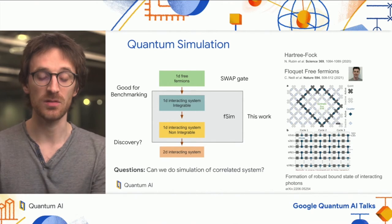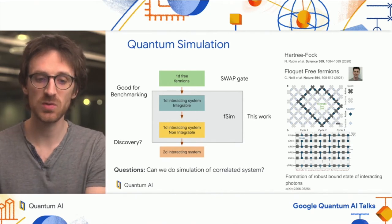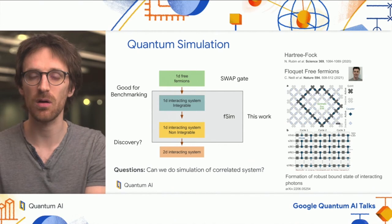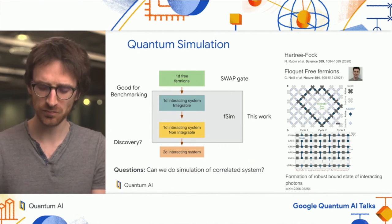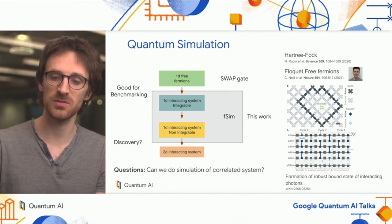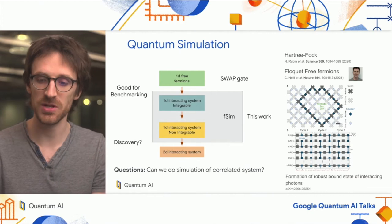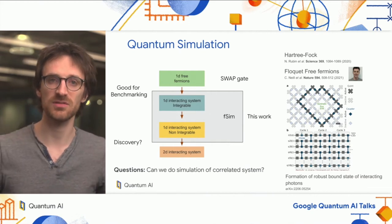The question we try to ask is: can we do simulation of correlated systems in a meaningful way on our quantum processor? This is related to a recent manuscript on the archive about the formation of bound states of interacting photons.